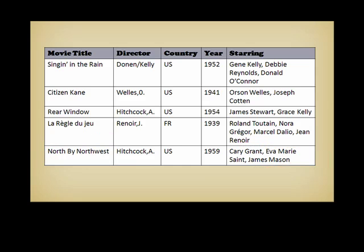It makes no sense to have the same row several times. An important step, when designing a database, consists in identifying the characteristics that allow us to distinguish one movie from another. Very often, these characteristics are a subset of all the characteristics. They are collectively called the key.